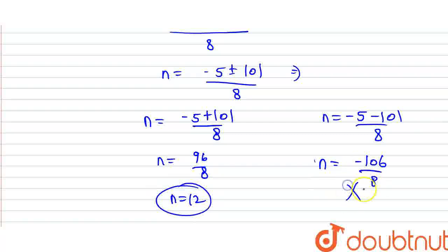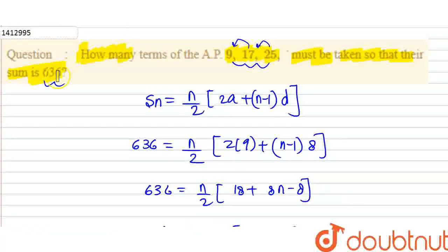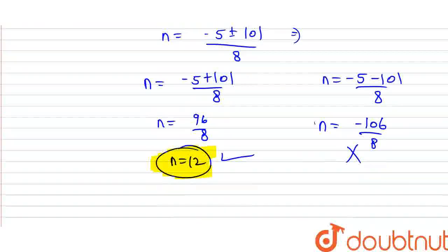So this is the required answer. So what did you ask? How many terms is this, so that my total is 636. So, total 12 terms is in my sequence. Thank you friends.